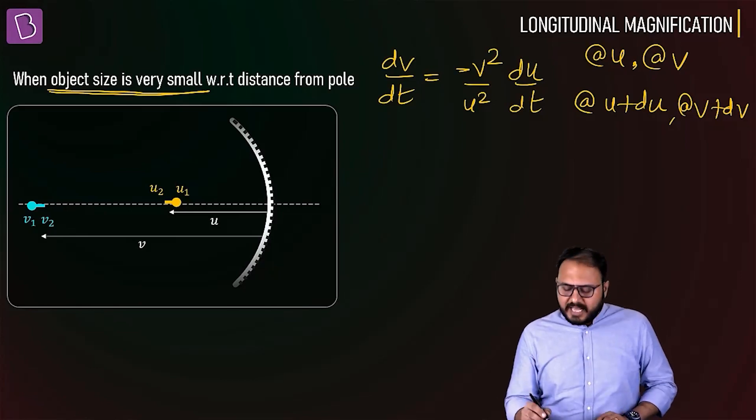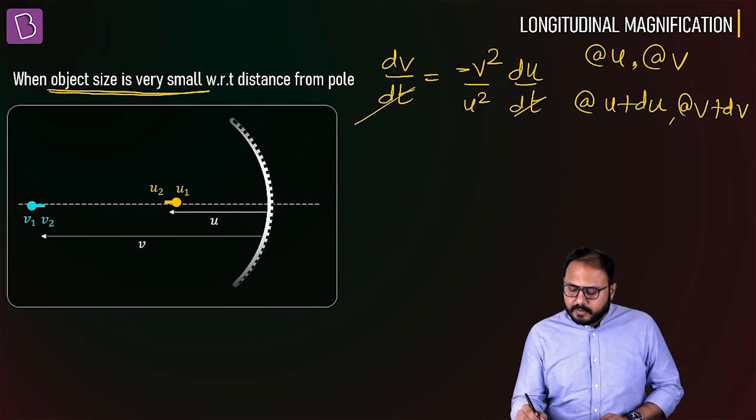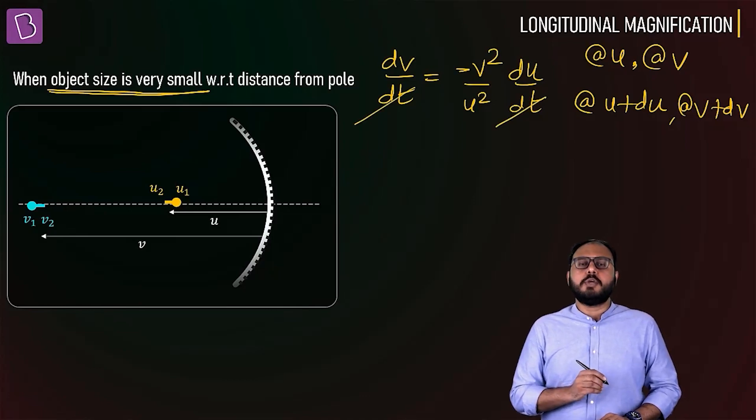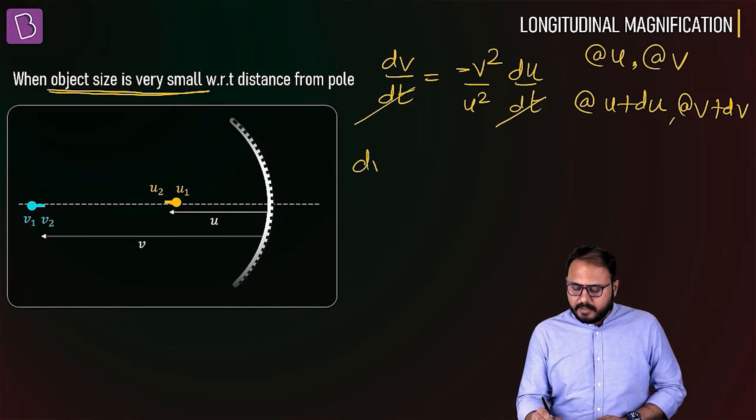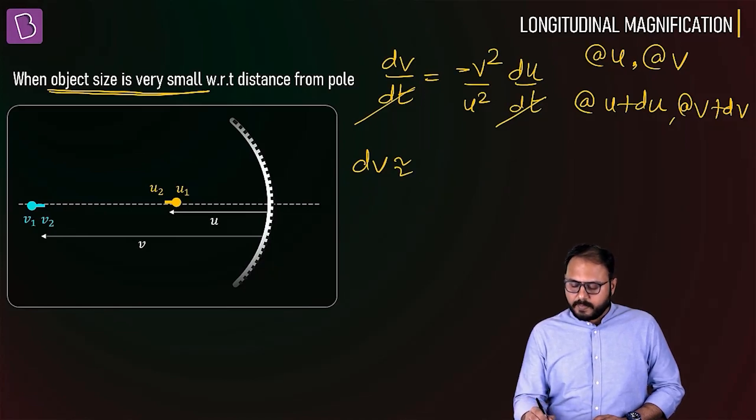If it's so small, you can keep the primary v and u values intact. dv is approximately minus v squared by u squared times du.